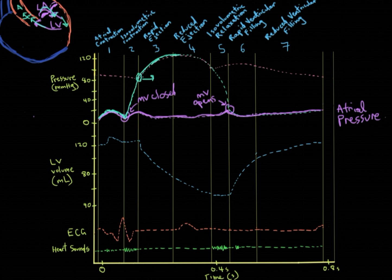We've ejected so much blood that you can't generate as much pressure with the remaining blood, so the pressure wave goes down. At this point the pressure in the aorta is higher than the pressure in the left ventricle, which forces the aortic valve to shut. So here: AV opens at the beginning of ejection and AV closes here. Then pressure keeps lowering as we're in the relaxation phase, and it stays steady until the next cardiac cycle.